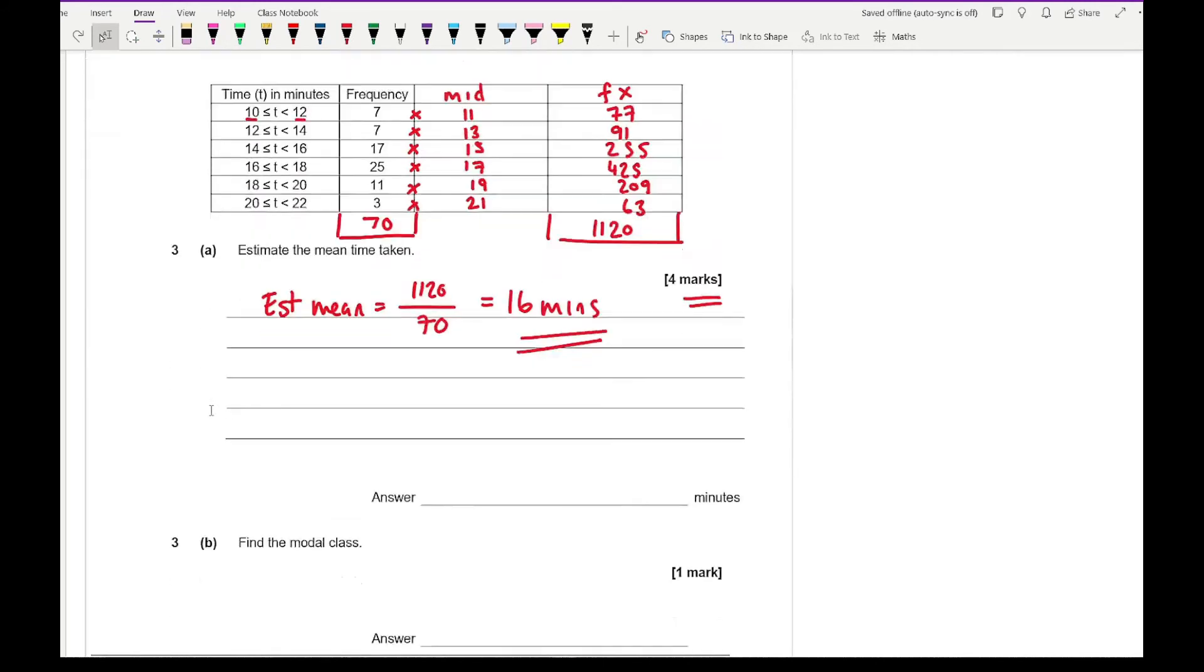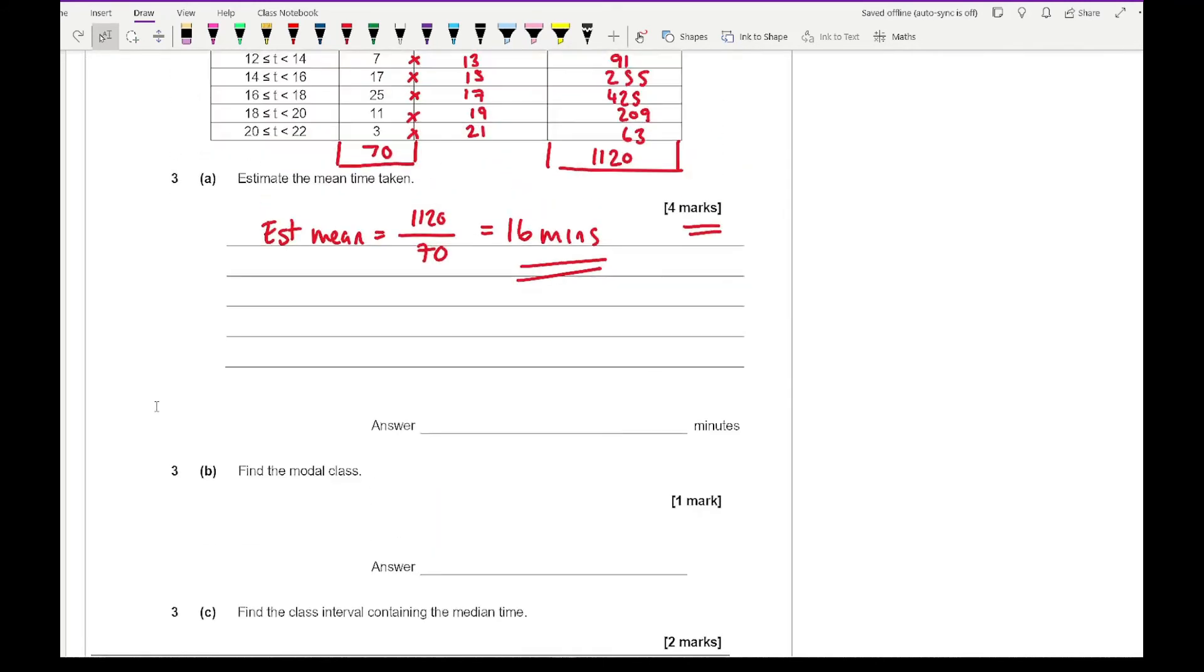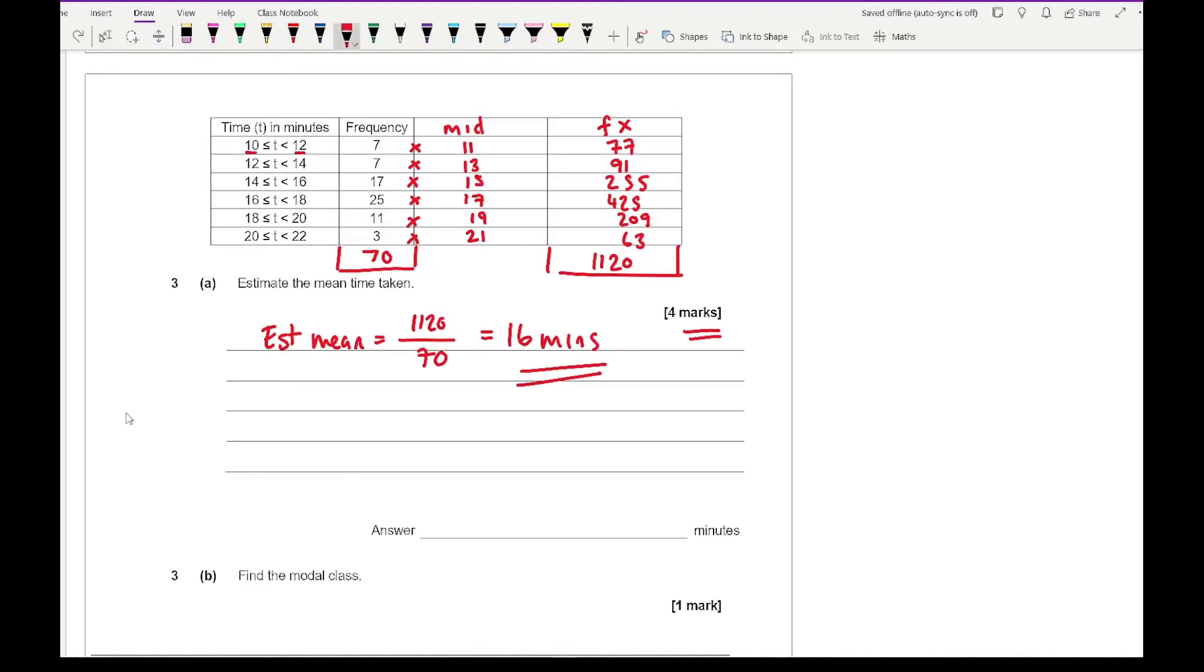Next question then says find the modal class. So the modal class is the group with the highest frequency, and that's going to be 16 to 18. Again, just try and copy the group in all its entirety of how it's written. Sometimes the inequality can differ from the first one to the second one, so just be mindful of that.